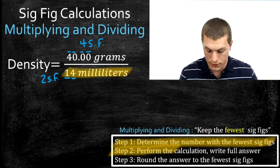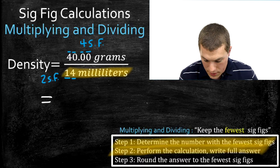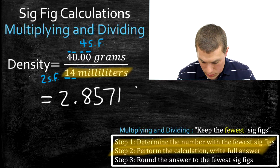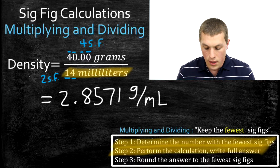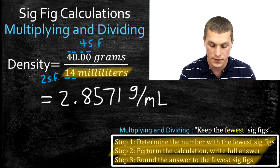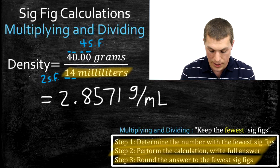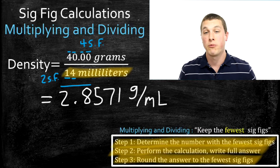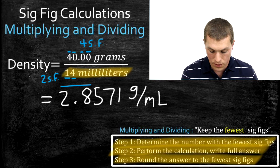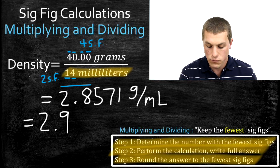We've identified which number has the fewest sig figs: 14 milliliters, with just two. Step two: go ahead and perform the calculation and write out the full answer. You type 40 divided by 14 into your calculator and get 2.8571, with units of grams per milliliter.